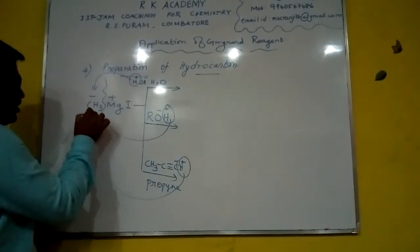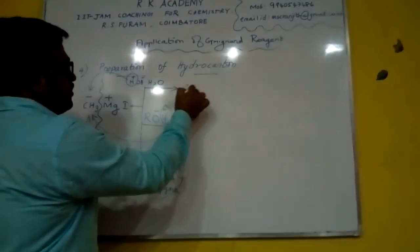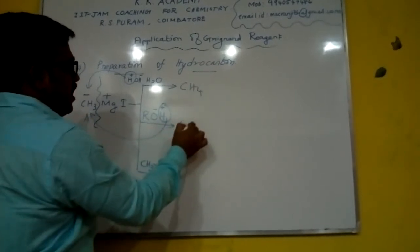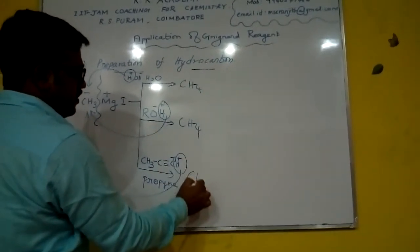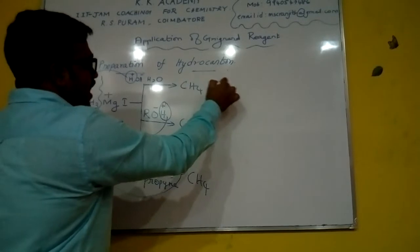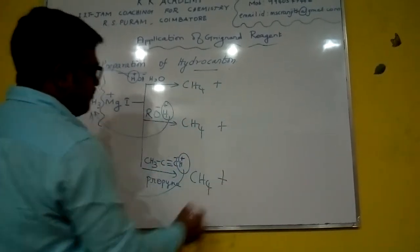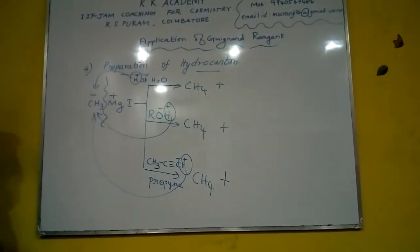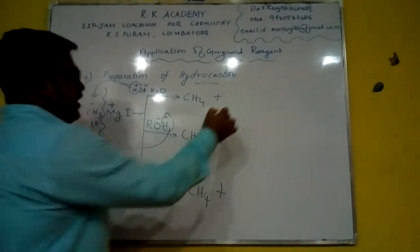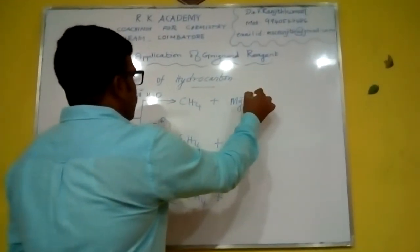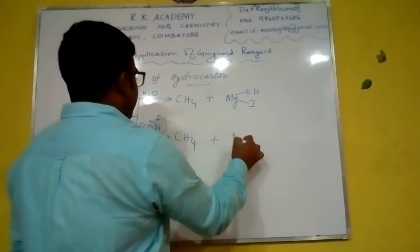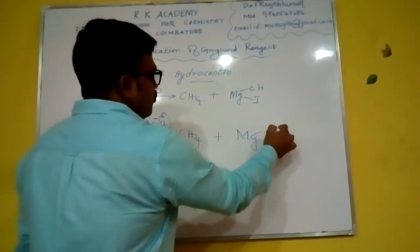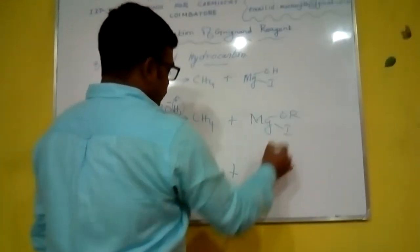So all the three reagents give me the hydrocarbon and the byproduct will be different. For the first case with water solvent, it is MgOHI. For the second one, MgORI.